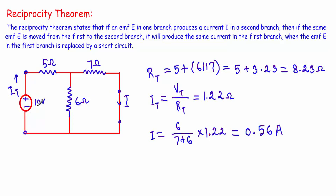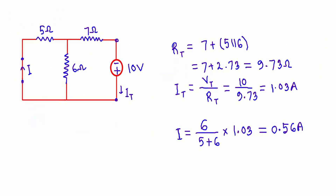In the second case, I will move the voltage source from its original position to the second branch and replace the original position with a short circuit, then measure the current through the first branch. I have placed the negative terminal of the voltage source in the upward direction and the positive terminal in the downward direction, because in our previous circuit current was flowing in that direction, so we have to preserve the direction of current flow in this circuit also.